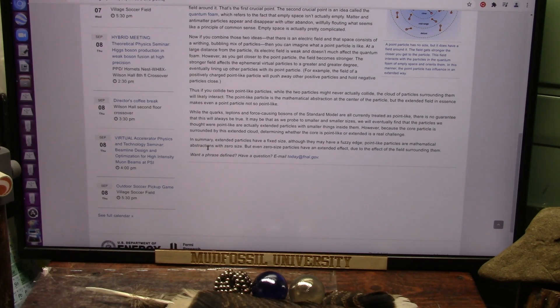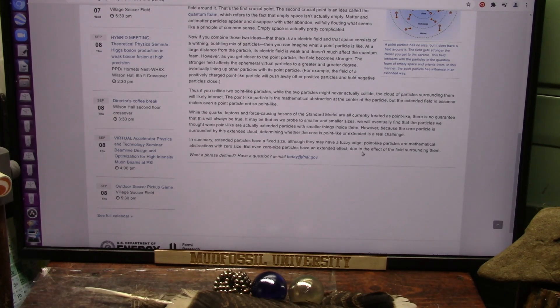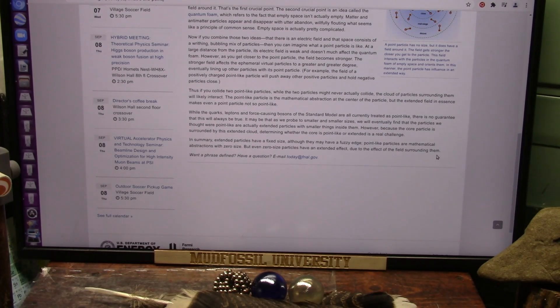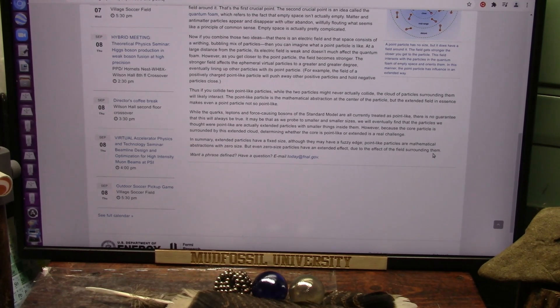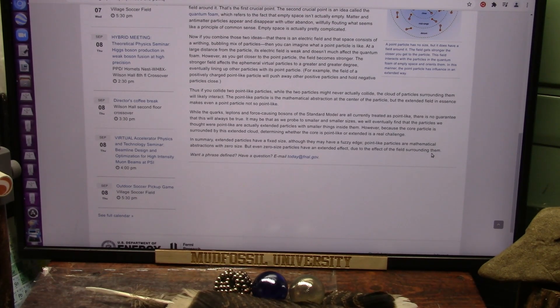Point-like particles are mathematical abstractions with zero size. I don't agree with that. They have to have something. But even zero size particles have an extended effect due to the effect of the field surrounding them. Well, surrounding something then, there is something in the middle. It's got to be to create that field. But it's very reactive, and the black is just the opposite. It's unreactive, it's a sucker.